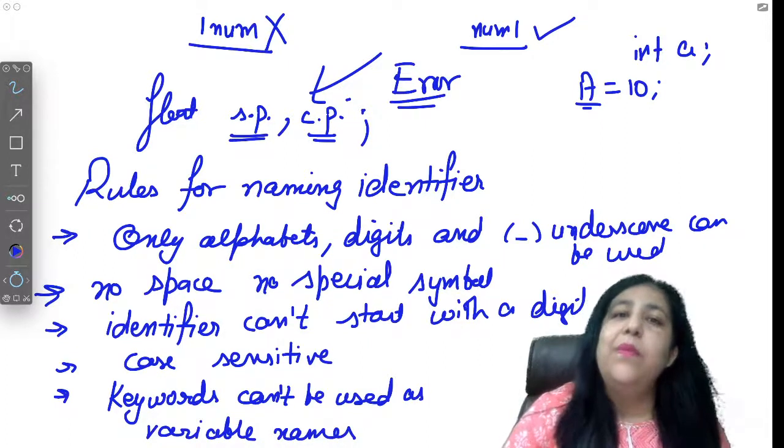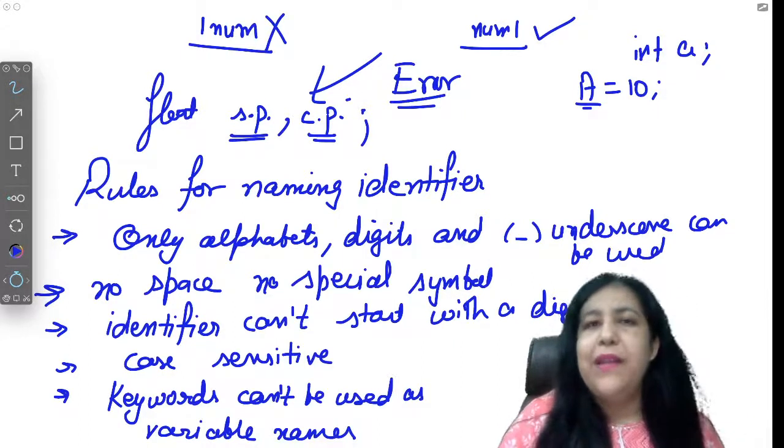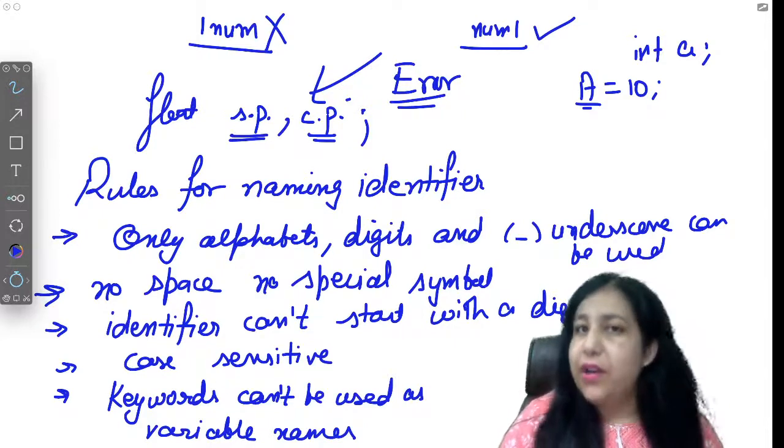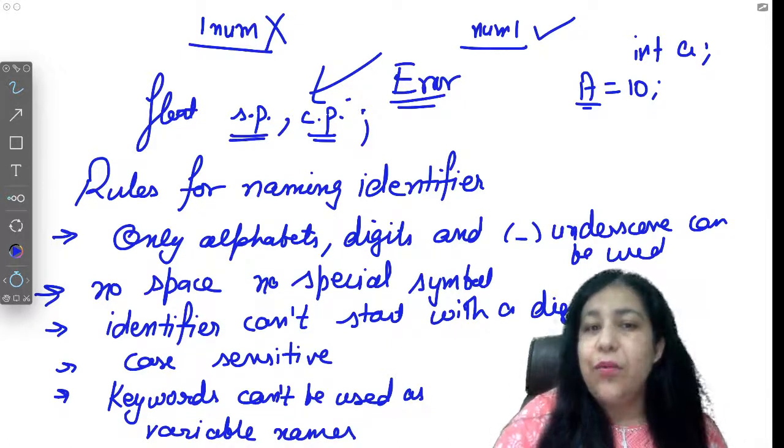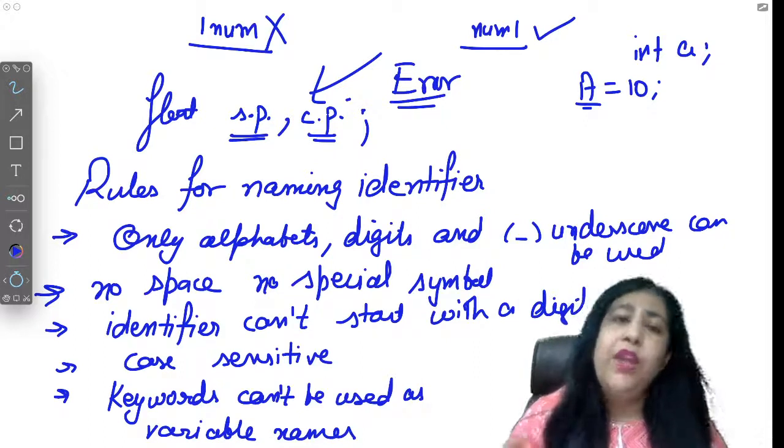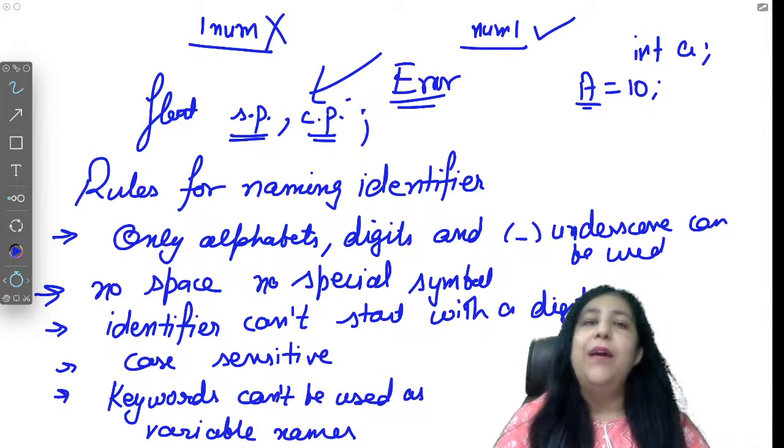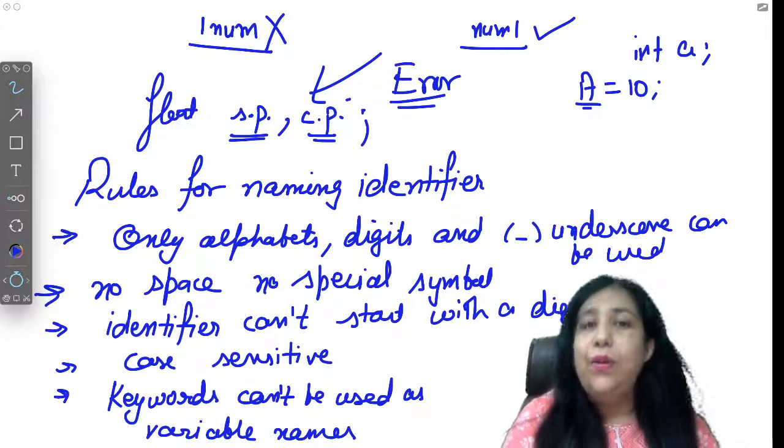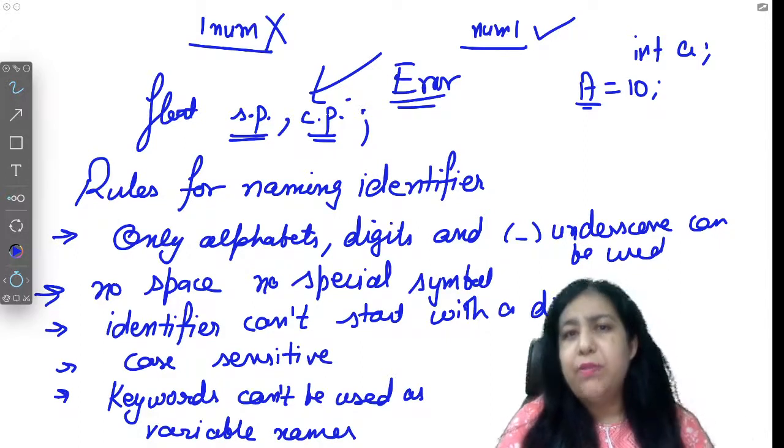There was one rule which was very traditional when we were working on Turbo C, that the name of the variable should be 8 letters maximum. But in modern compilers like VS Code, there is no such restriction. In modern compilers you can use as many characters as you want, using alphabets, digits, or underscore. No space, digit not possible in the first position, case sensitive, and keywords cannot be used.